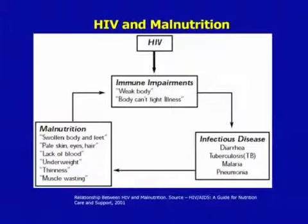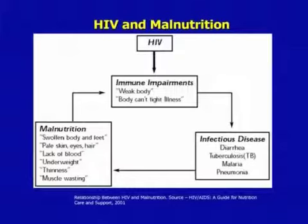When we look at HIV, we realize that adults or children with HIV face a double burden: HIV with its immune impairments leads to infectious disease, malnutrition, and the whole cycle continues, with additional intercurrent infections compounding the problem.